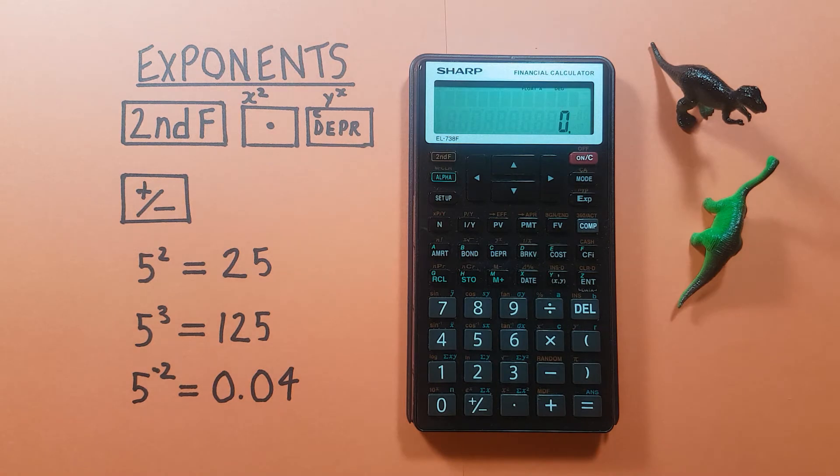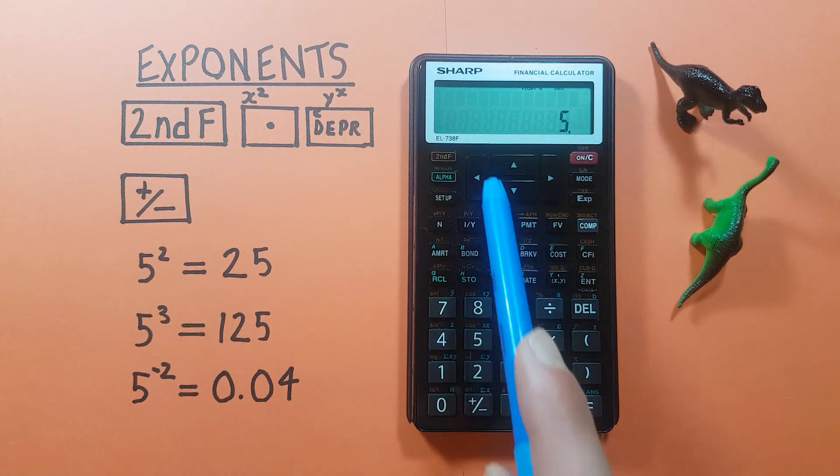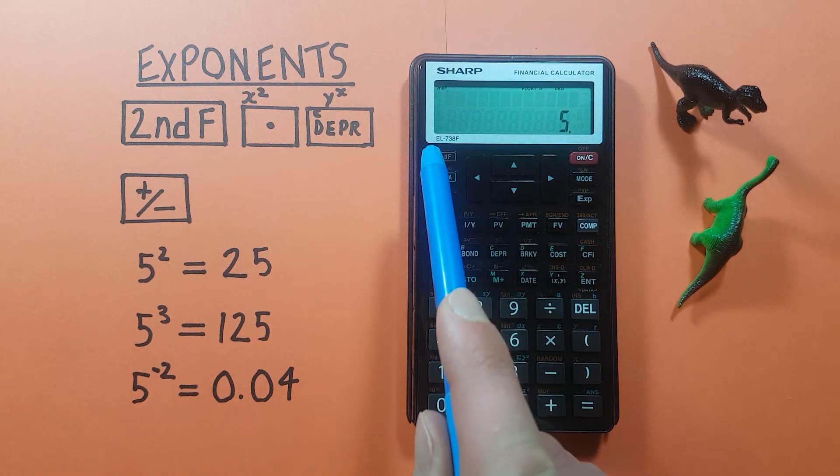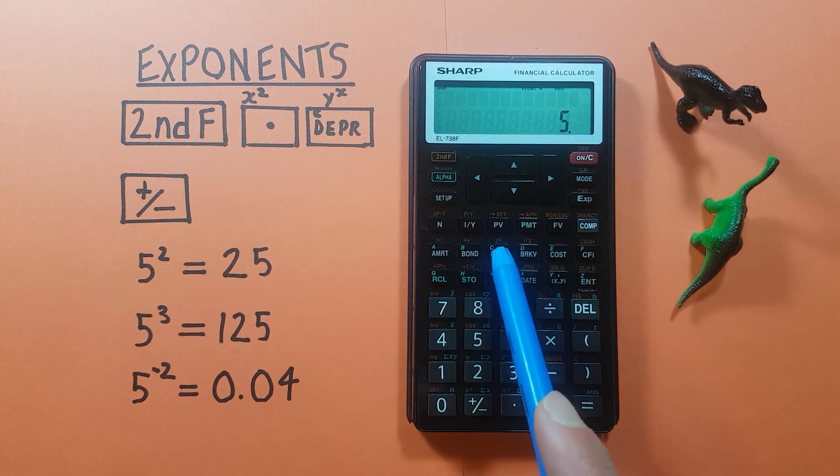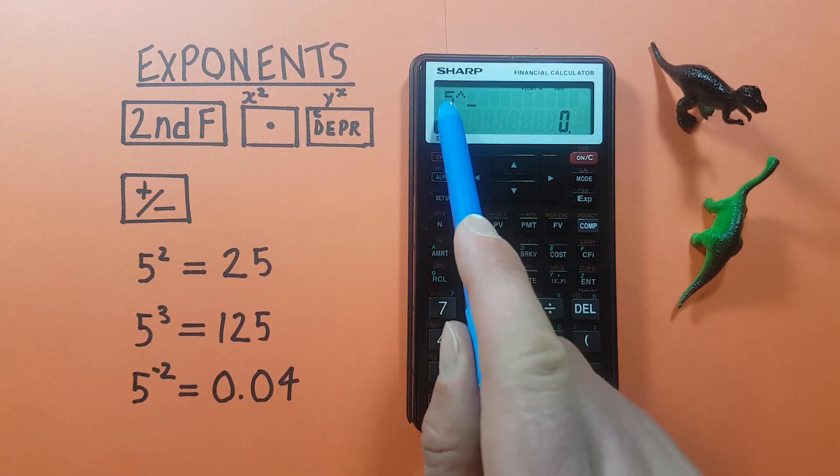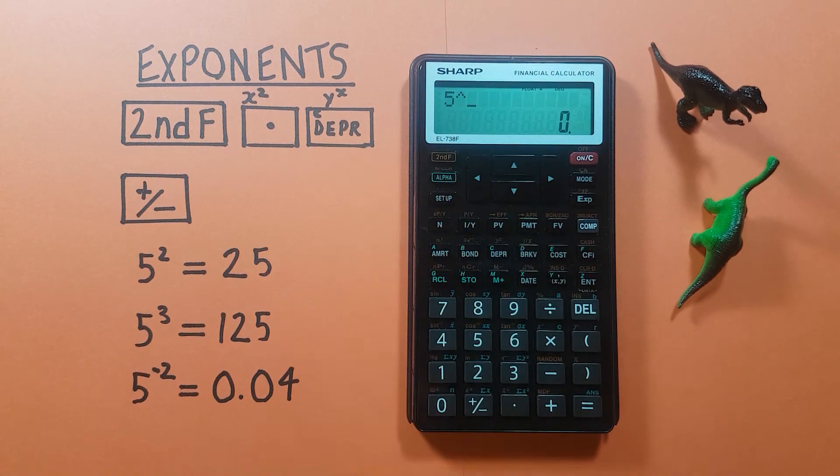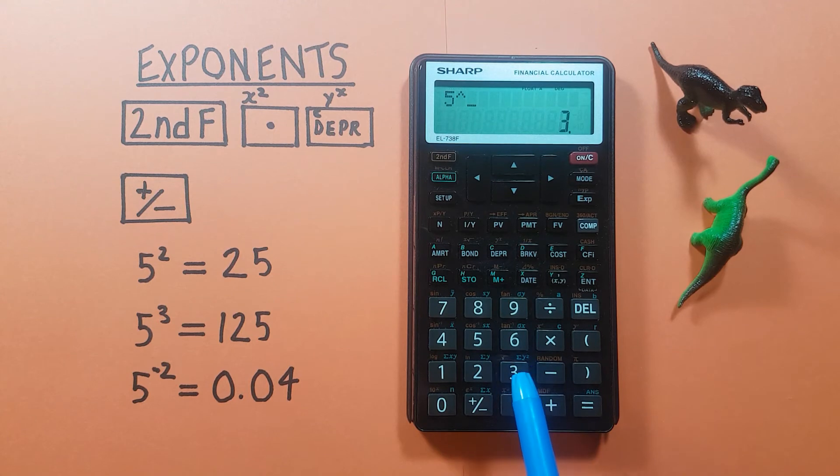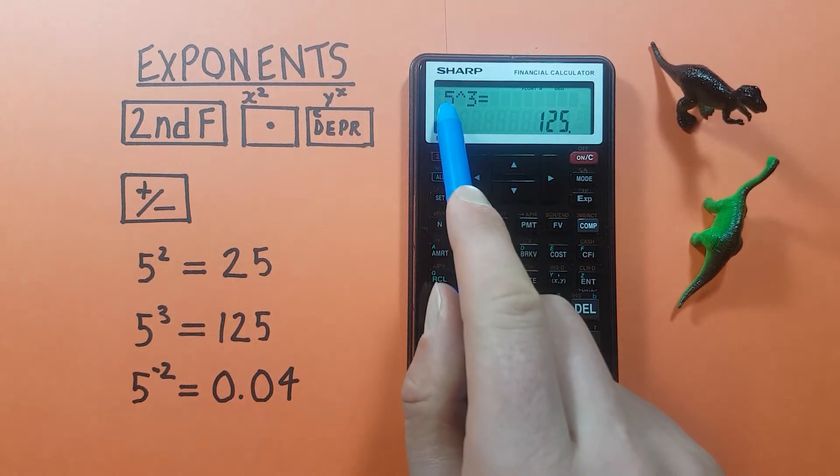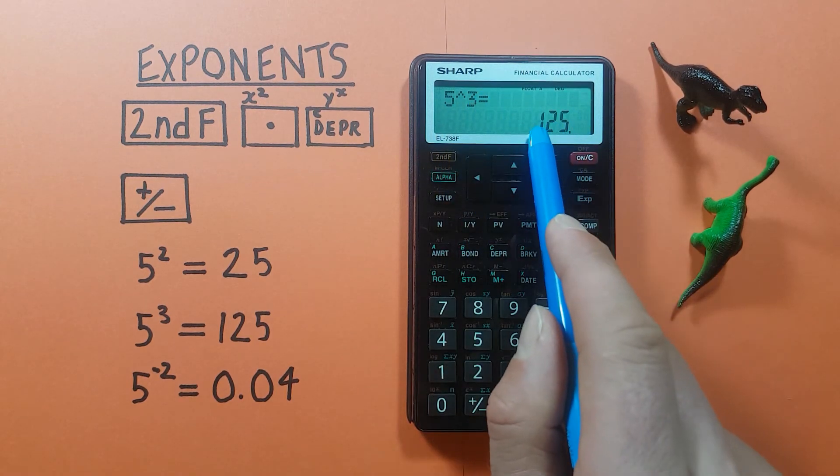What about solving for an exponent or power that isn't 2? Well to do that, for example say 5 to the power of 3 or 5 cubed, again we put 5 on the screen and then hit the second function key and then this time we hit the DEPR key right here. Now we see a caret or up arrow appear on our screen after the 5, and then we enter our exponent which in this case is 3 and press equals, and there we go we see 5 to the power of 3 equals 125.